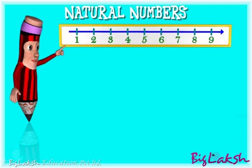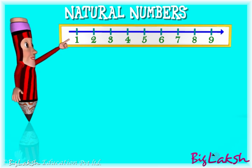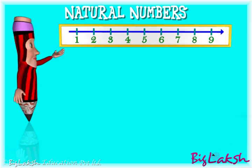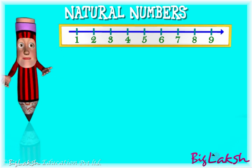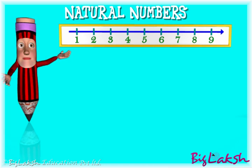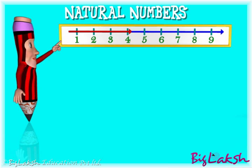You cannot see zero on the number line because natural numbers do not contain zero. Therefore they are also called counting numbers. You can notice that natural numbers extend from 1 to infinity.